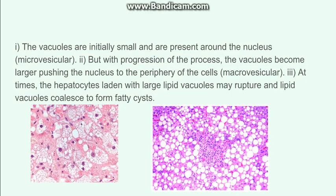In microvascular change, as we can see in this picture, the vacuoles which are carrying the fat are small and are present around the nucleus. In the macrovascular change, with progression of the process, the vacuoles become larger and then push the nucleus to the periphery of the cell — the nucleus is pushed to the periphery. Lastly, in the fatty cysts, when many hepatocytes laden with these large lipid vacuoles rupture, they form fatty cysts.